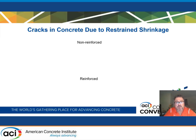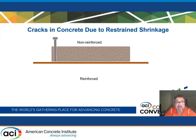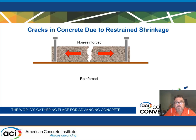Let's talk about what happens when cracking occurs in a slab on ground — non-reinforced versus reinforced. Consider a concrete slab on ground with plenty of frictional force between the slab and the base restraining volumetric changes due to temperature and drying shrinkage. In a non-reinforced slab, as that volumetric change occurs — that decrease in temperature or moisture — you get a crack. Once that crack happens, the tension is alleviated and the crack then widens, resulting in a wide crack.